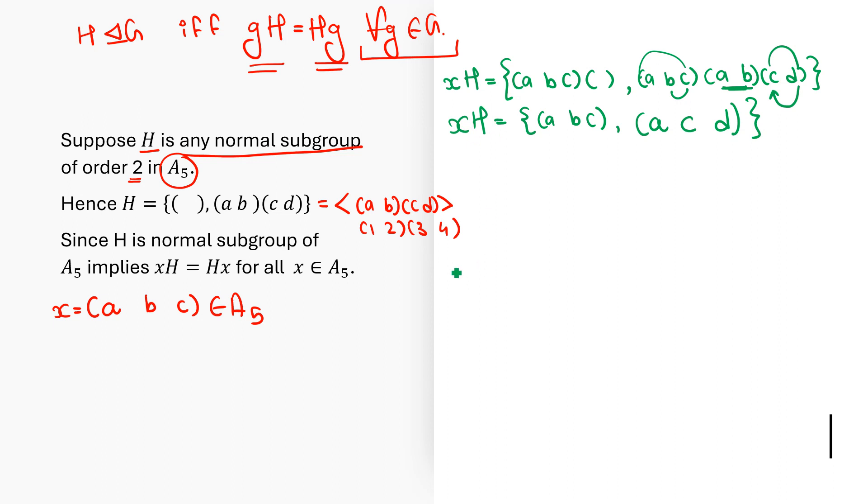Now let me consider HX. It is identity times (ABC), and (AB)(CD) times (ABC). If I multiply with identity, it is (ABC). For the second product, A goes to B and B goes to A in the first cycle, so A goes to itself. B goes to C, C goes to D, so it is D. D goes to C, C goes to A, and A goes to B, giving (BDC). Since A is fixed, I don't write it. So HX equals {(ABC), (BDC)}. Hence you can easily observe XH is not the same as HX in this case.